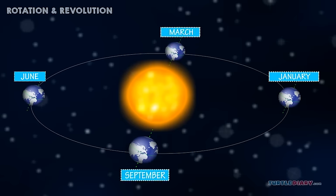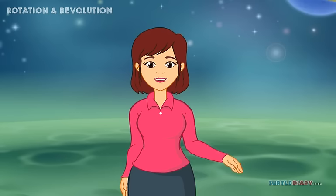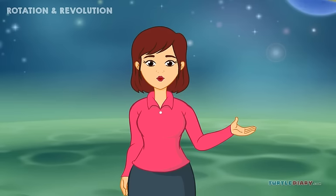In March and September, the Sun is facing right at the middle of the Earth. The rays of the Sun hit the northern and southern hemispheres equally. Days and nights are about equal in length.